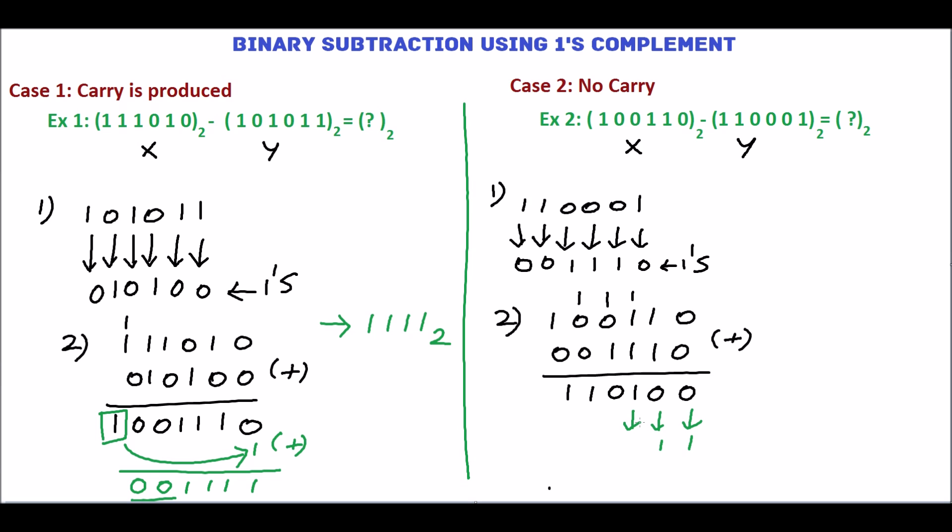0 will be 1, 1 becomes 0, 0 becomes 1, 1 becomes 0, 1 becomes 0. Finally, assign negative sign to this. So the final answer is minus 001011 base 2. We can leave this leading two 0's. So the answer is minus 1011 base 2.